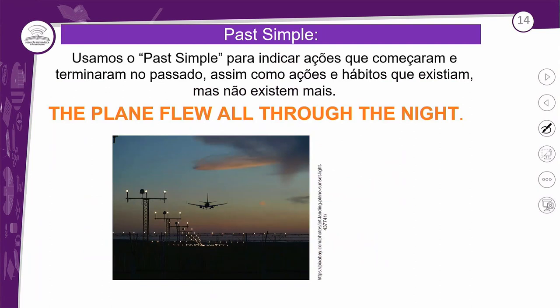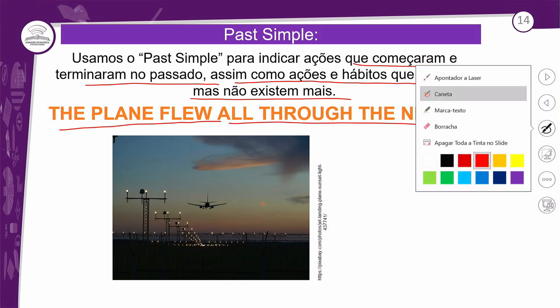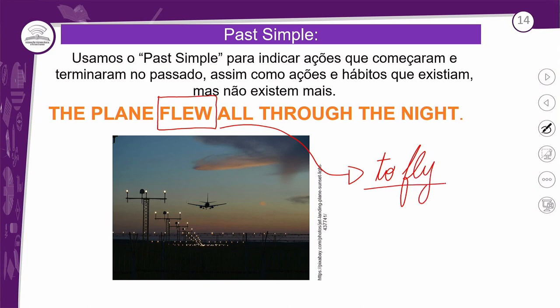Vamos relembrar. Temos uma frase onde o verbo está no passado irregular — vem do verbo 'fly', voar. O passado dele é 'flew'. O avião voou por toda a noite. Fica bem diferente do presente!